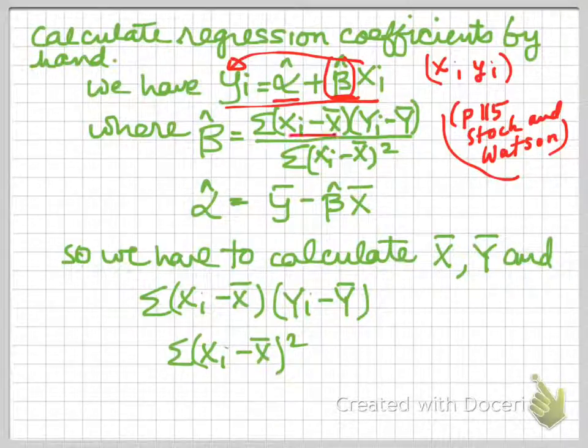And the formula says take the summation of xi minus x bar multiplied by yi minus y bar, so the summation of all those terms, and divide by the summation of xi minus x bar squared. So that's the formula we have.